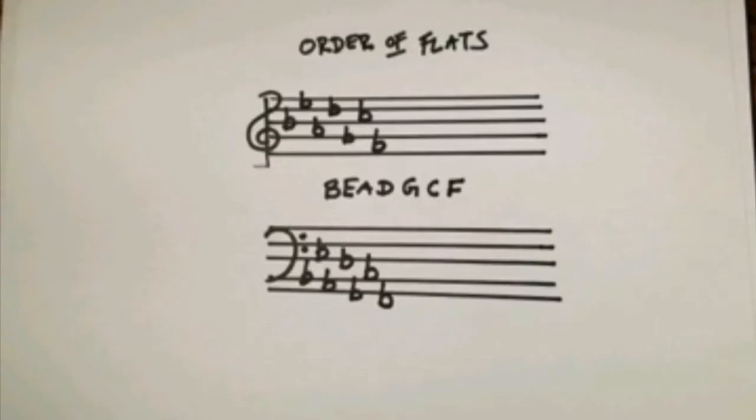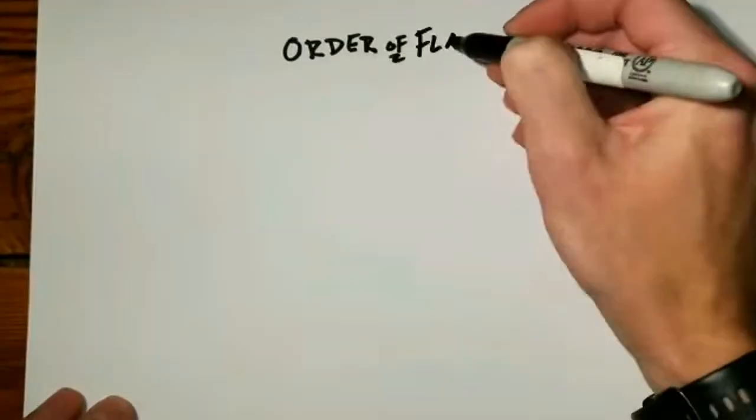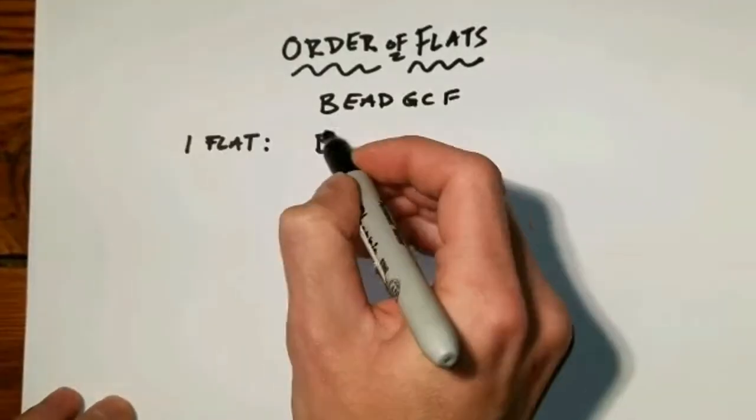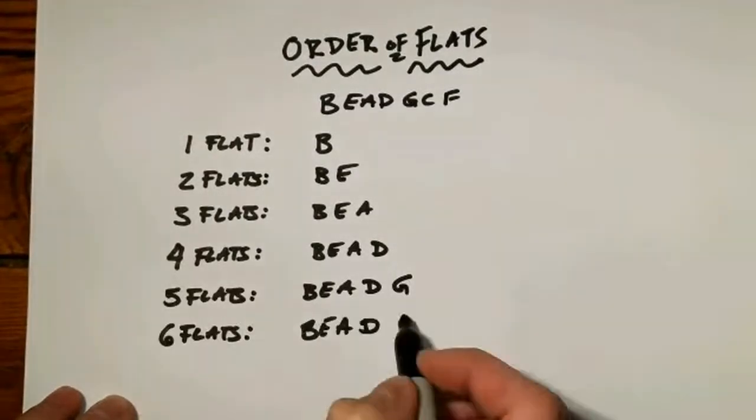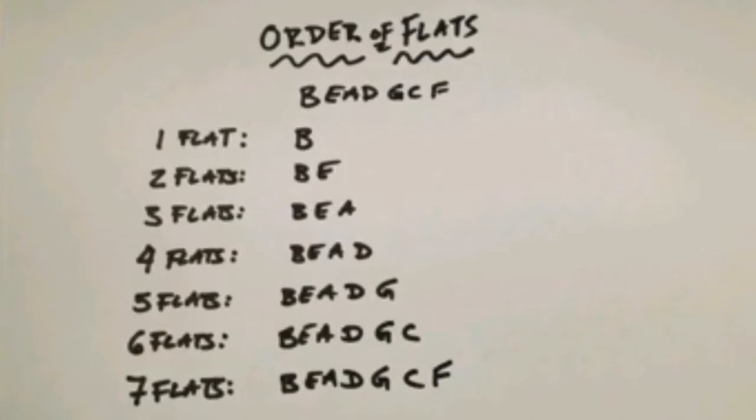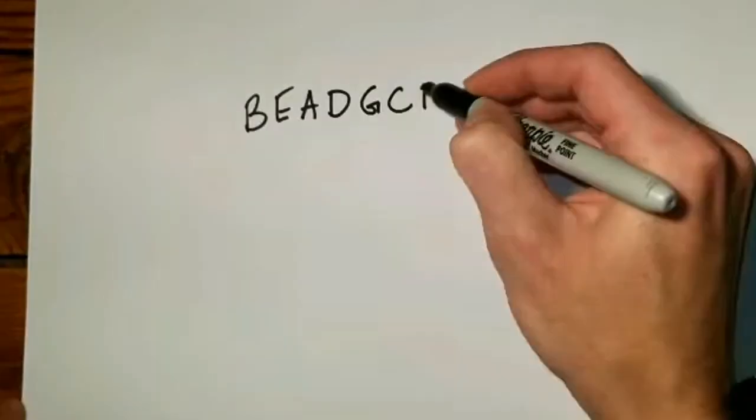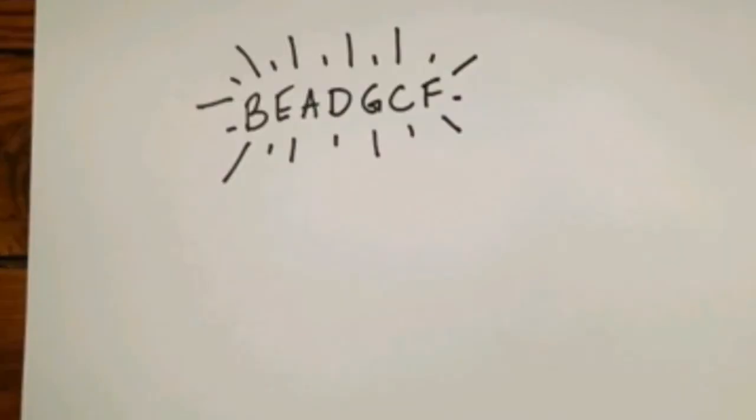So if we know the order of flats and somebody asks us what's in the key signature with two flats, we'll be able to tell them that the first two flats are B-flat and E-flat. And the same thing goes with the rest of the key signatures. A key signature with three flats would reuse the first two and add the third one. So it would have B-flat, E-flat, and A-flat. So all you have to do is memorize the order of flats, B-E-A-D-G-C-F, and you will be able to use that order to help figure out what's in any key signature and any scale.